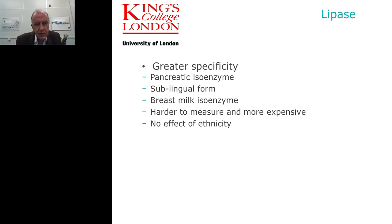Lipase has greater specificity, although it's not specific — about 80 to 90 percent is derived from the pancreas, but there are sublingual forms, and in lactating women there is a breast milk isoenzyme. It is becoming much easier to measure now and less expensive, although it is still significantly greater cost and less available than amylase measurement. It does not have any effect associated with ethnicity.